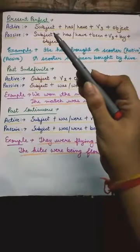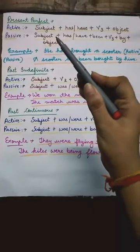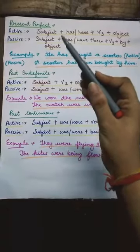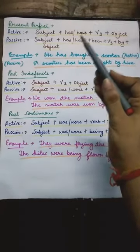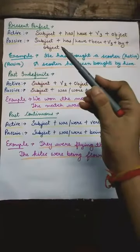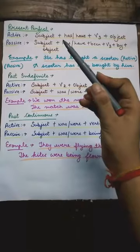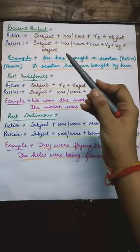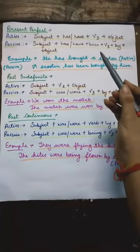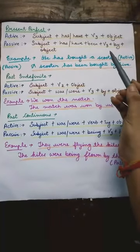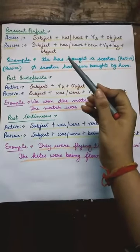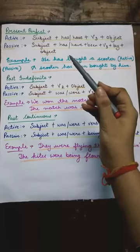Now move to the next tense, that is present perfect tense. Active sentence का structure होता है: subject + has/have + third form of verb + object. But जब उस sentence को passive में change किया जाता है, तो structure होता है: subject + has/have + been + third form of verb + by + object. To understand this rule, let's read one example.